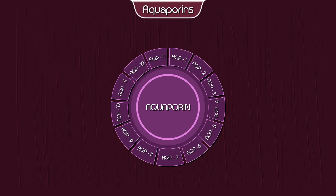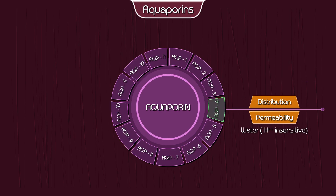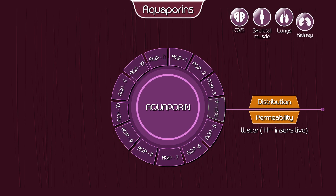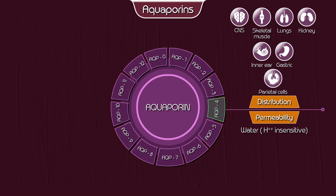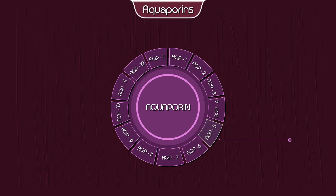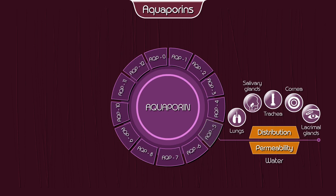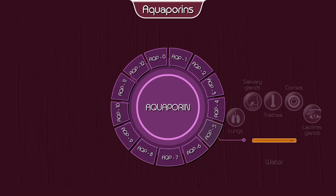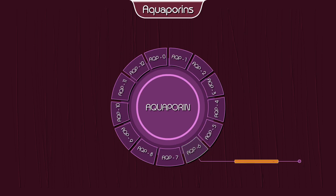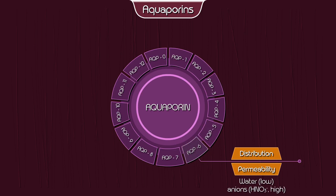Aquaporin 3 — permeability: water, glycerol, urea; distribution: the kidney and colon. Aquaporin 4 — permeability: water; distribution: the CNS, skeletal muscles, lungs, kidney, inner ear, and gastric and parietal cells.